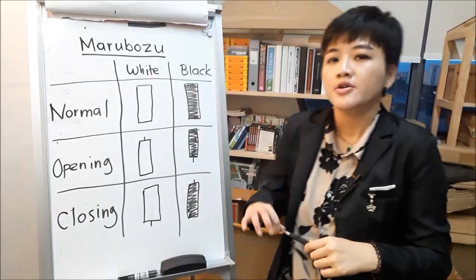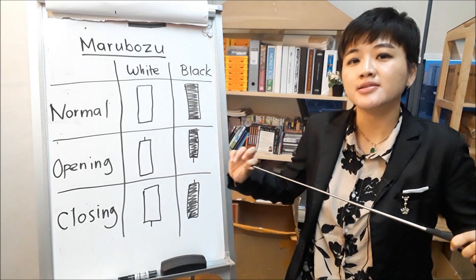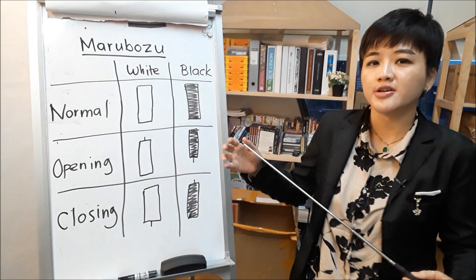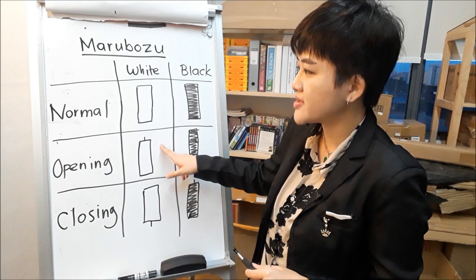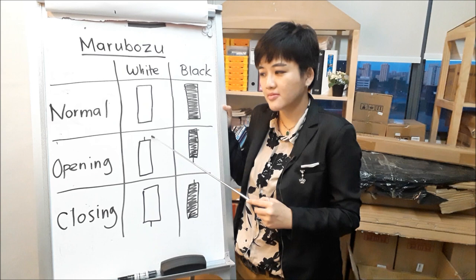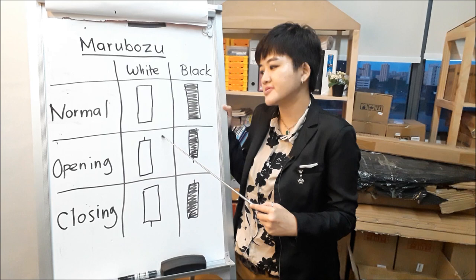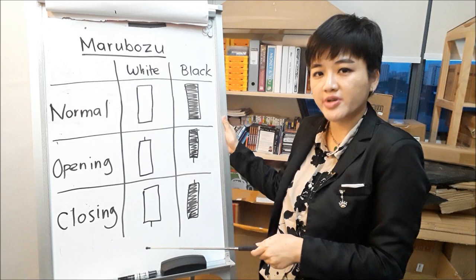When you see any of these candlesticks, will they cause a continuation or a reversal? In the real world, the perfect Marubozu with no wicks is not very common. What's more common are these four variants. If you compare opening white with closing white, which is a stronger bullish signal? Opening white has a small upper wick — when price opens, buyers push it up, but a little bit of sellers came in and pushed the price down slightly. So the stronger bullish signal is the closing white. The answer would be closing white.